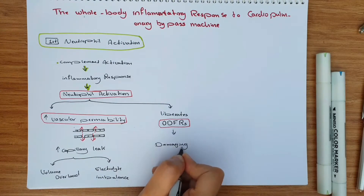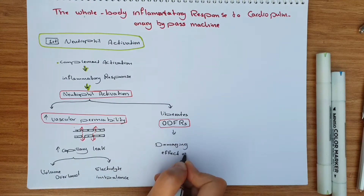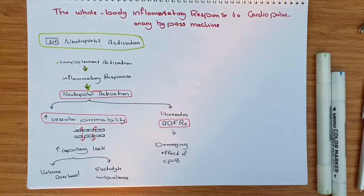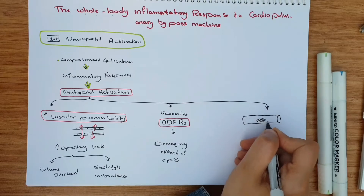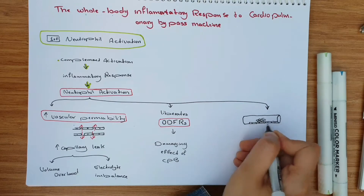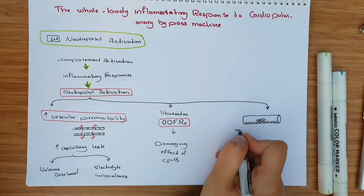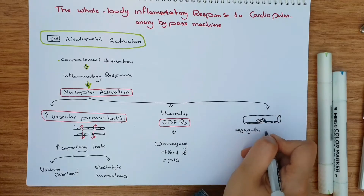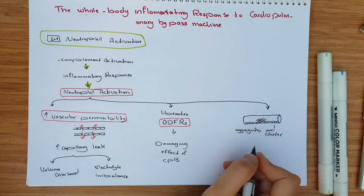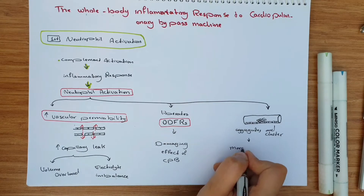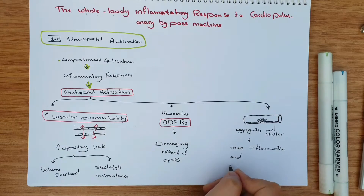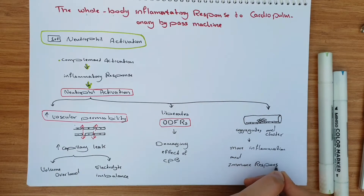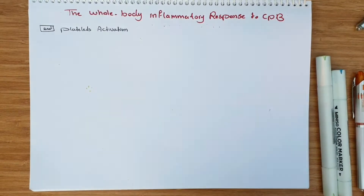Another effect is that neutrophils generate oxygen-derived free radicals — harmful radicals that are part of the damaging effects of the cardiopulmonary bypass machine. We also have another response due to neutrophil activation, which is aggregation and clustering of neutrophil cells to each other or to other cell types like the endothelium. This activation and aggregation causes more inflammation and more immune response.